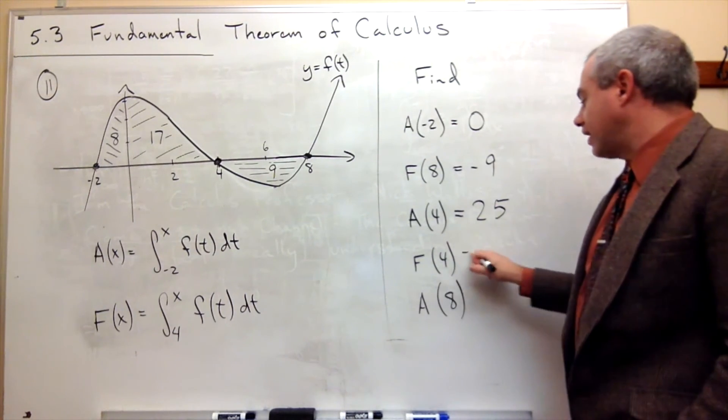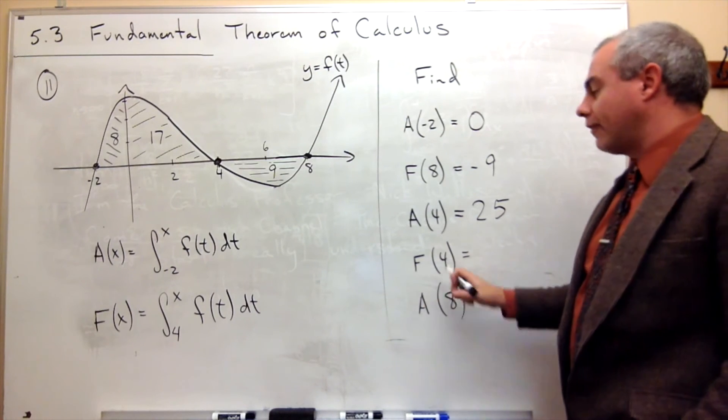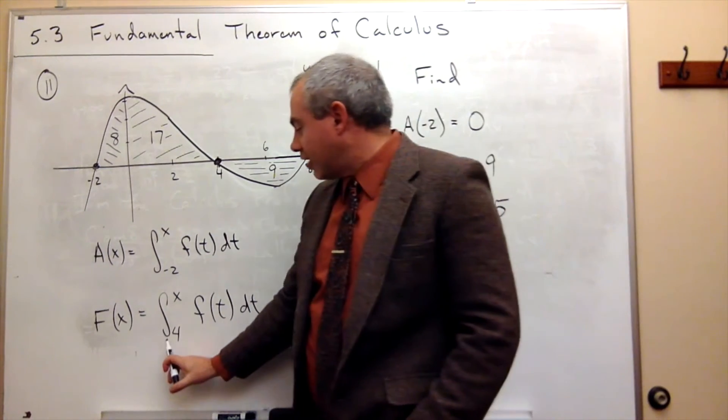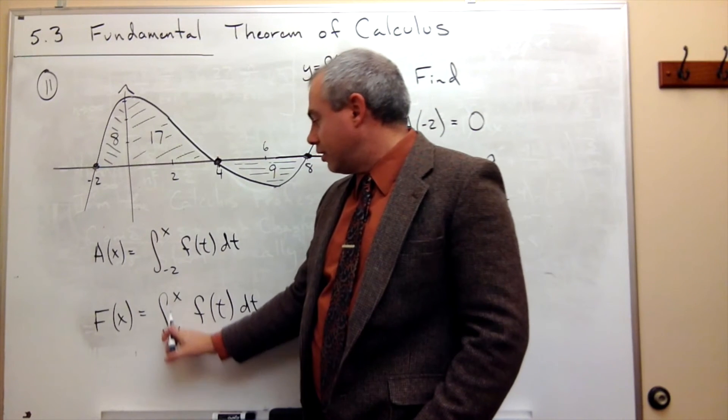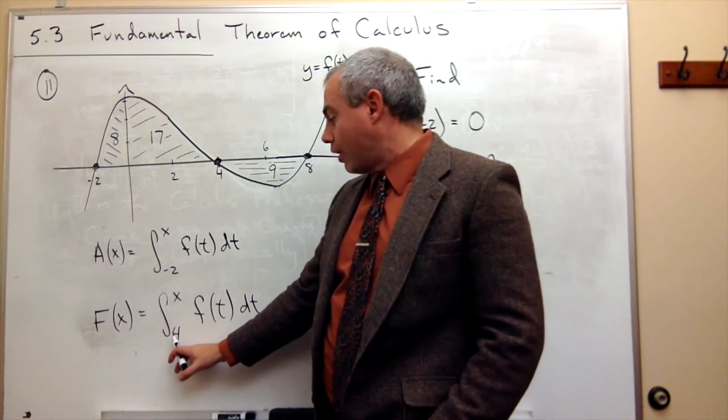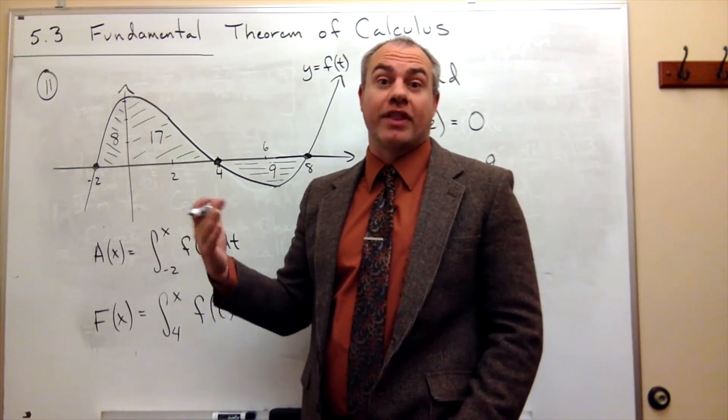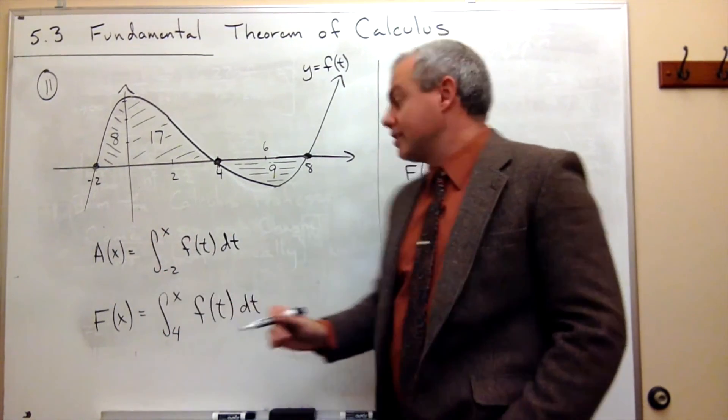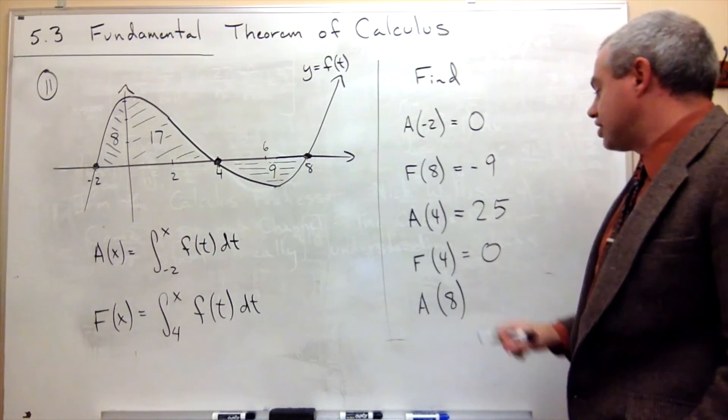If I look at capital F of 4, then I'm integrating from 4 to 4. And again, anytime that I integrate from a point to itself, how much area is over that one point, none. So the answer is 0.